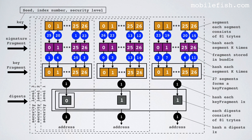I can now finally explain why a normalized bundle hash should never have trit value M. If the normalized bundle hash were allowed to have value M, then the calculation would be 13 minus 13 = 0. If this value is 0, then this key segment is not hashed at all. This part of the signature fragment would reveal this part of the key, and that is something you don't want to do.